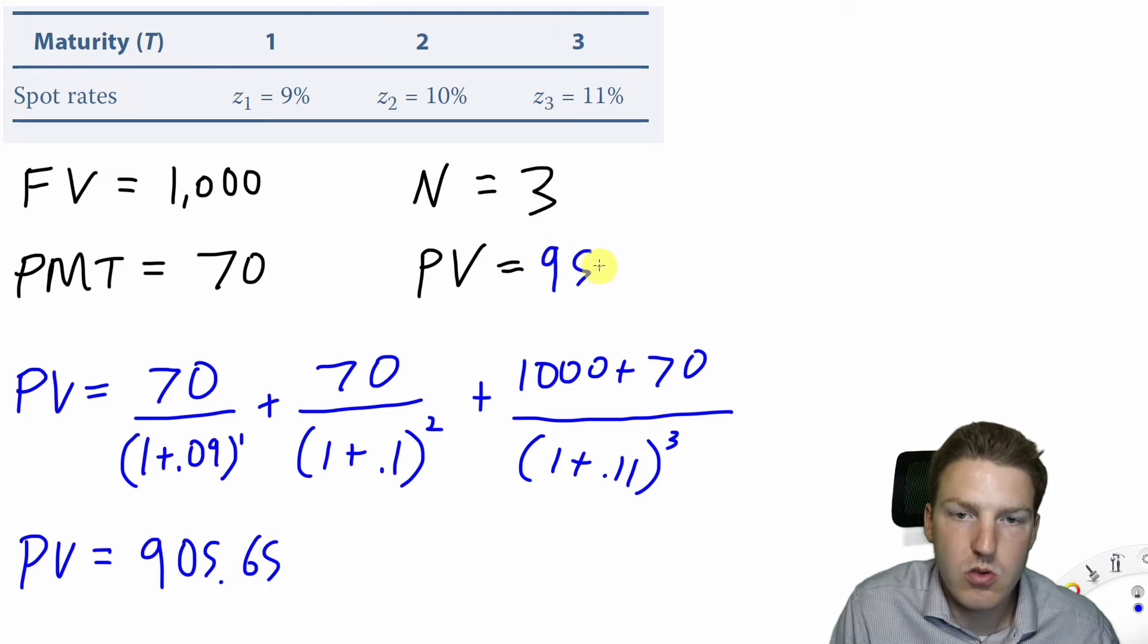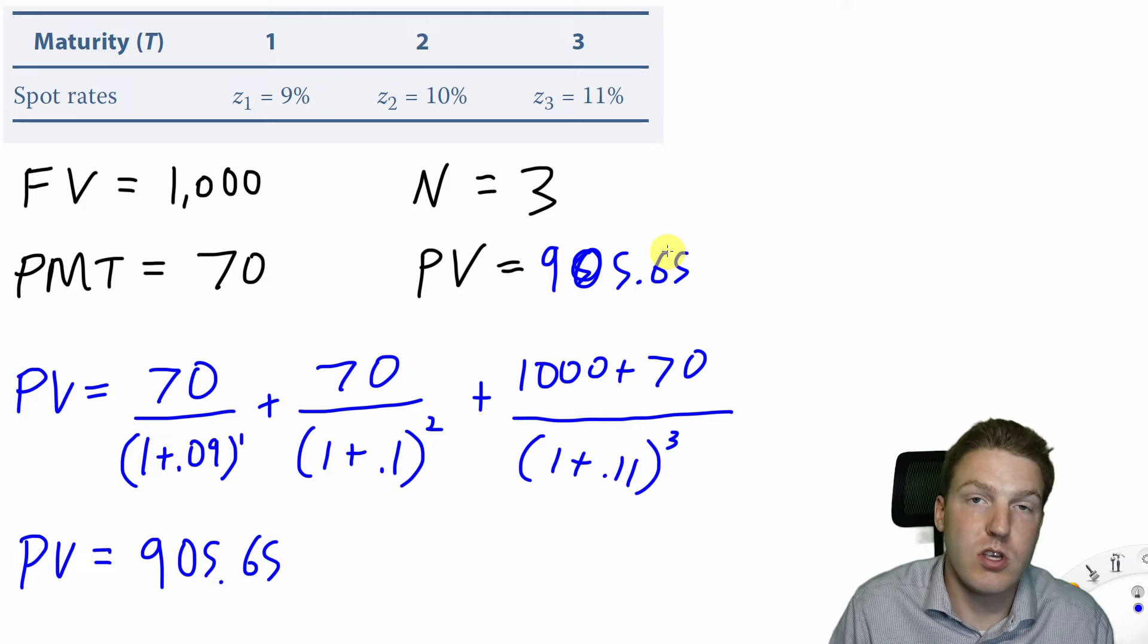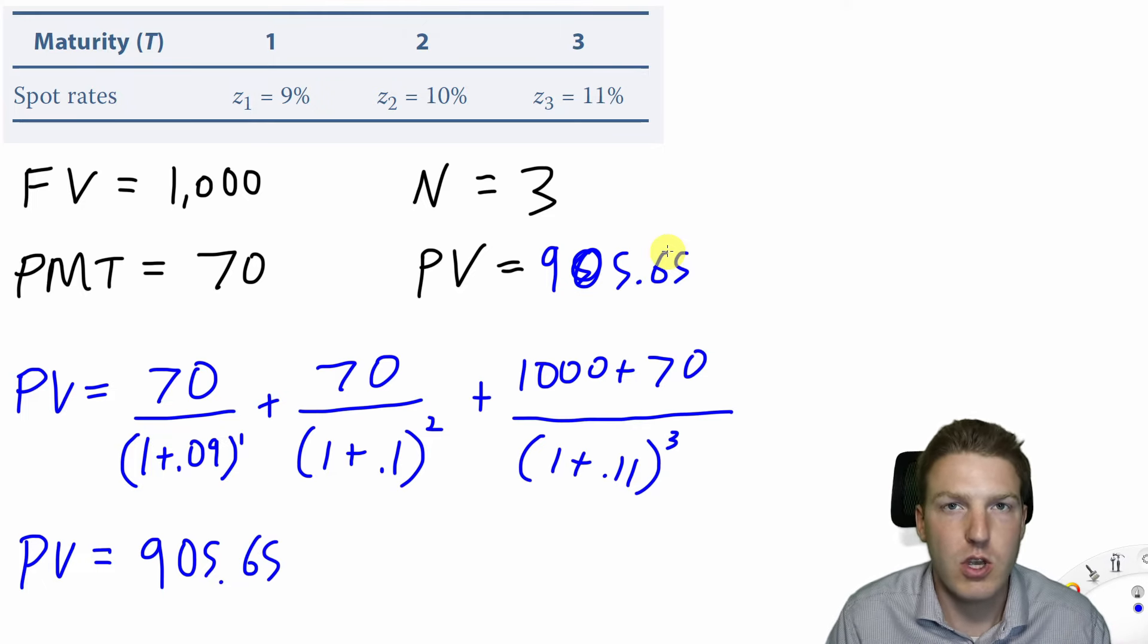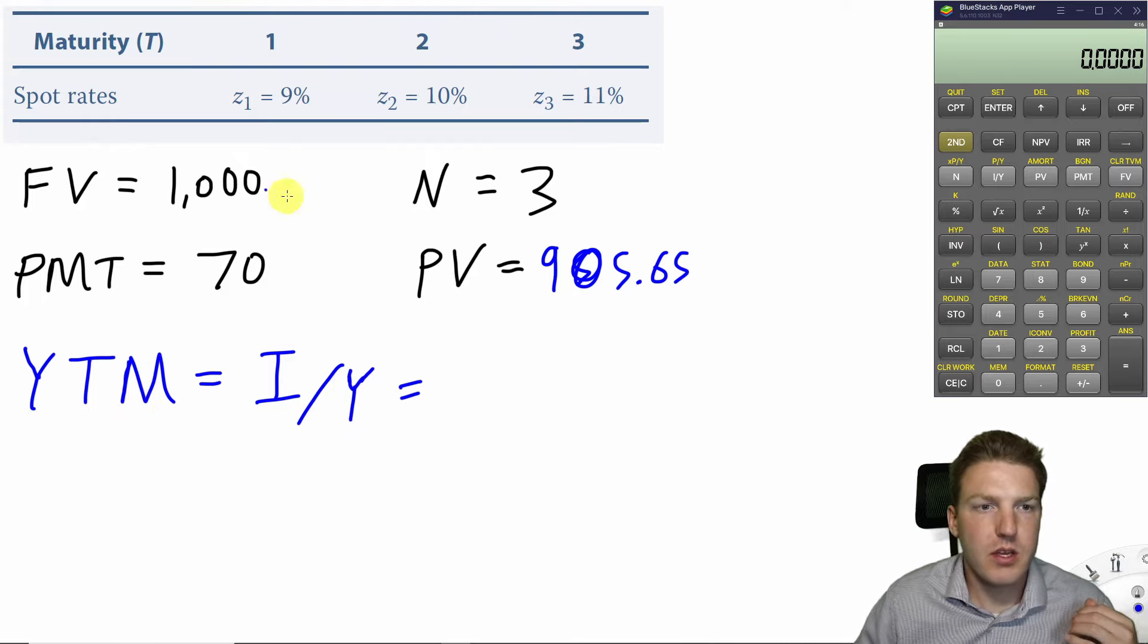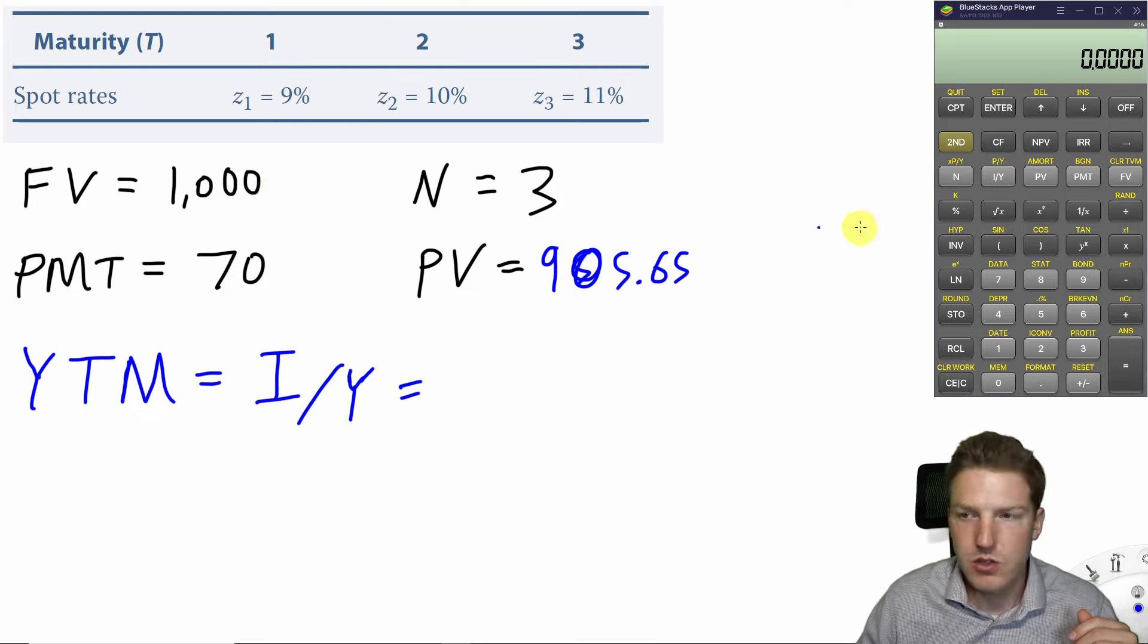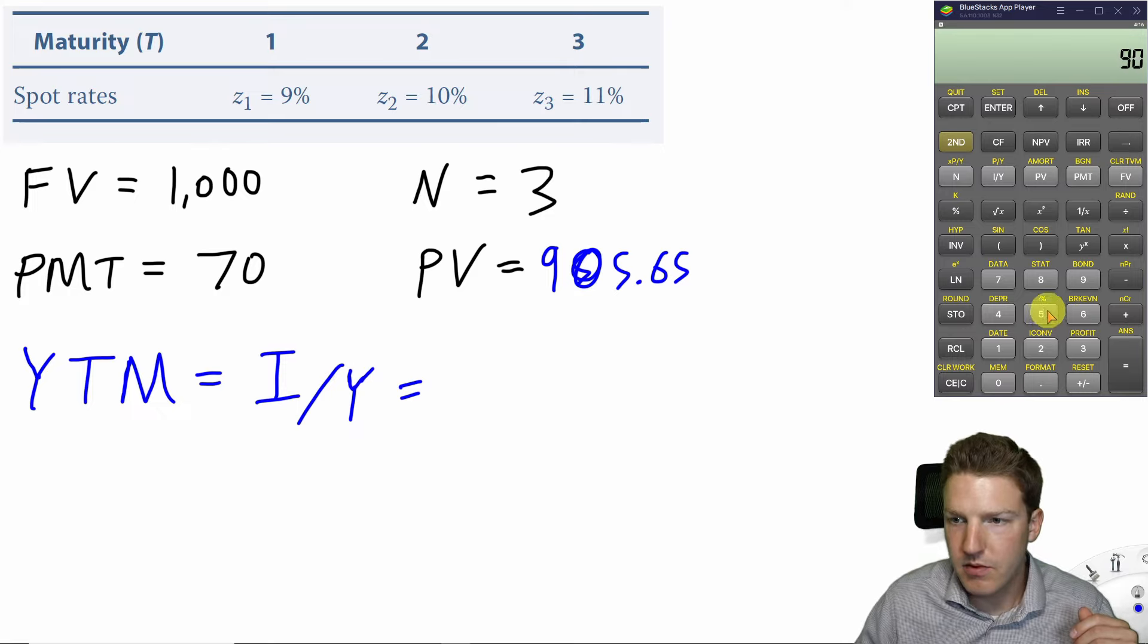Now we can use this present value to calculate the yield to maturity with a financial calculator. We can solve for yield to maturity by putting those four attributes into our financial calculator. First we'll put in $1,000 for future value, then a negative $905.65 for the present value, 3 for n, so three periods,